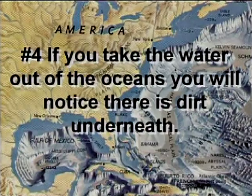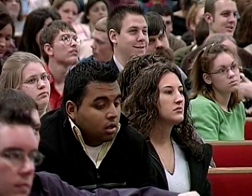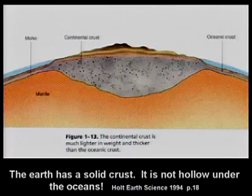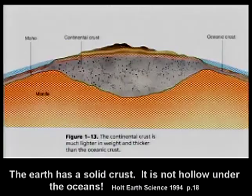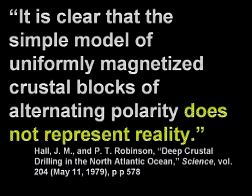People say, 'Do you think the continents were ever connected?' Well, they're still connected right now — they've always been connected. The earth has a crust; the low places are full of water. The textbooks say there are magnetic reversals at the bottom of the mid-Atlantic ridge — but that's simply not accurate. There are no reversed polarity areas unless it's where rocks flipped over when the fountains of the deep broke open. Even one author wrote in Science Magazine, volume 204, on deep crustal drilling in the North Atlantic Ocean, 'It's clear the simple model of uniformly magnetized crustal blocks of alternating polarity does not represent reality.' What they show in textbooks is not reality.